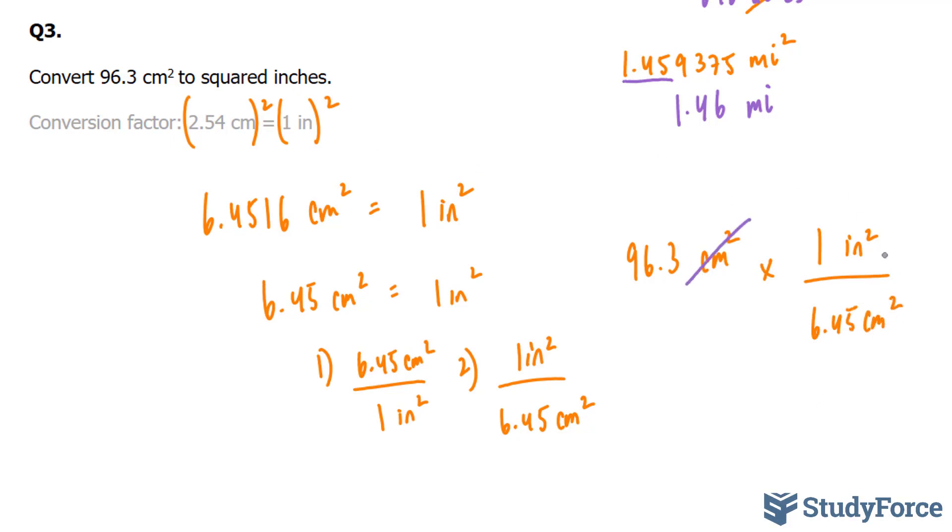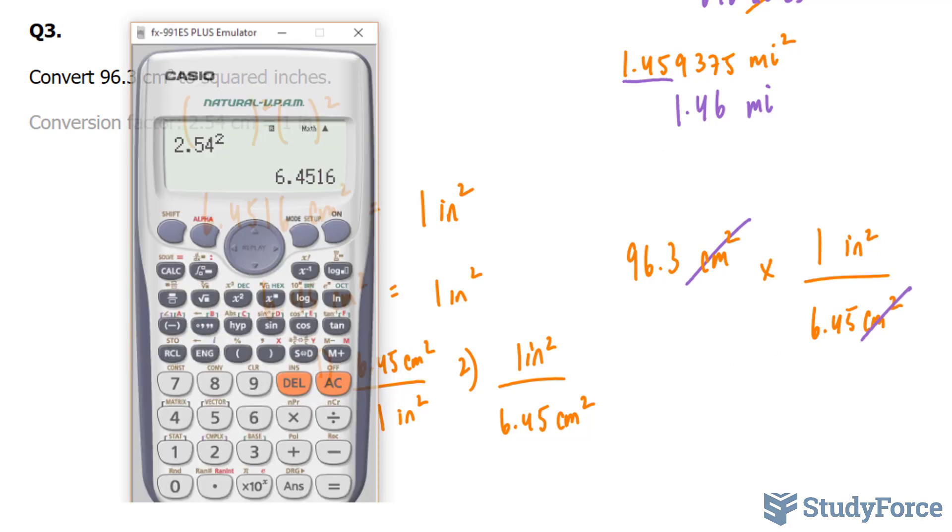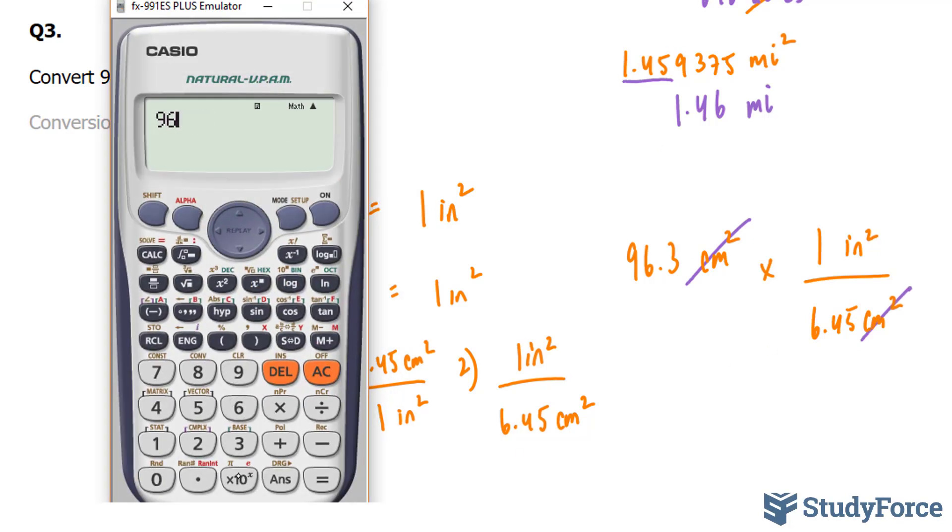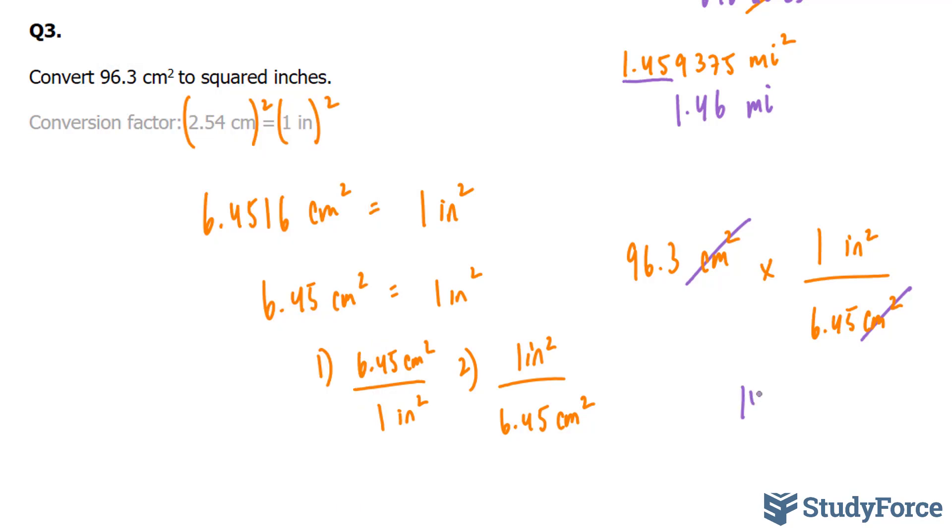We're going to cancel this out with this centimeter. And we end up with 96.3 divided by 6.45. And we end up with an answer of 14.93 inches squared. Remember to keep in mind significant digits. This had three, so your final answer should also have three. We'll discard this three, leaving us simply with 14.9 inches squared. And there you have it.